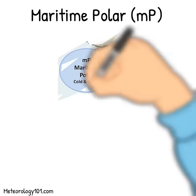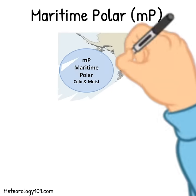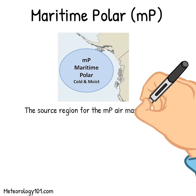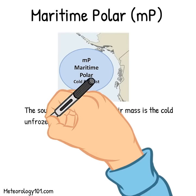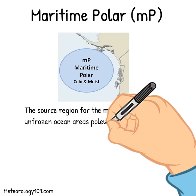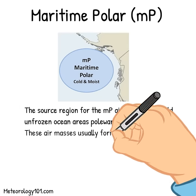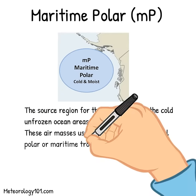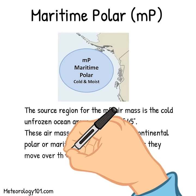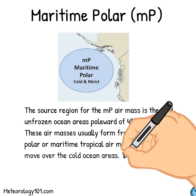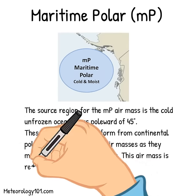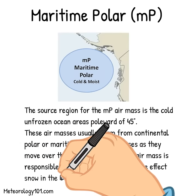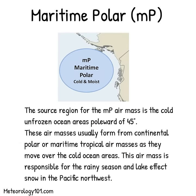The source region for the maritime polar air mass is the cold, unfrozen ocean areas poleward of 45 degrees. These air masses usually form from continental polar or maritime tropical air masses as they move over the cold ocean areas. This air mass is responsible for the rainy season and lake effect snow in the Pacific Northwest.